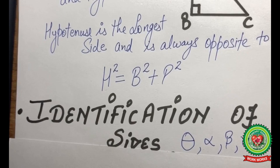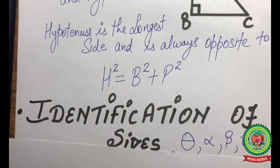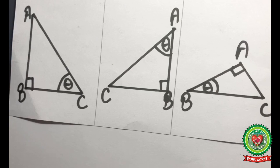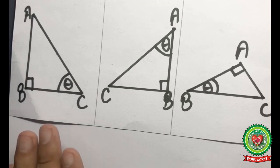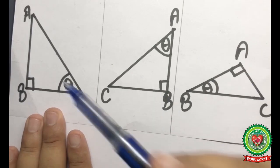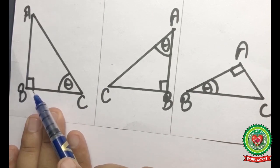Now let us discuss how to identify the sides of a right-angled triangle — which side is the base, which is the perpendicular, and which is the hypotenuse — when a reference angle is given. This reference angle could be theta, alpha, beta, gamma, or any other acute angle. Let us look at three different examples with three right-angled triangles.